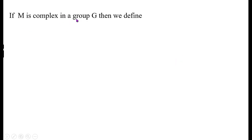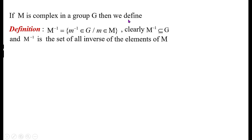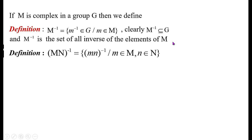If M is a complex in a group G, then we define M inverse as the set of all inverses of elements of M. Since elements of M belong to G, M inverse must also be in G. Therefore, M inverse is clearly a subset of G, and M inverse is the set of all inverses of the elements of M.